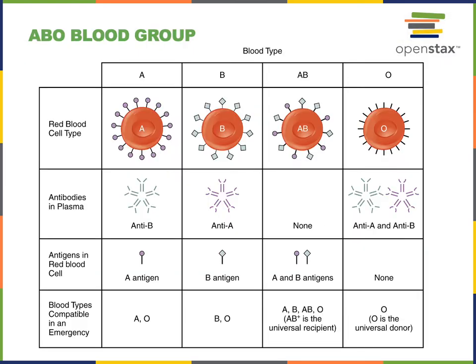Here we see a table showing the ABO blood group. If a person has type A blood, they have the A antigen on the surface of their erythrocytes, and they will produce antibodies that can bind to the B antigen, causing a transfusion reaction if we give them type A blood or type AB blood.